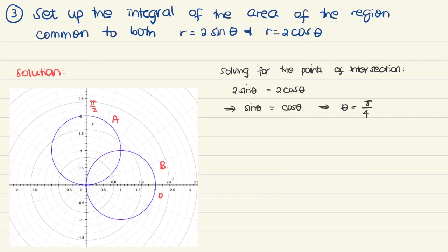This means theta should be pi over 4 since the circles are drawn from 0 to pi. We can plug pi over 4 into either r to get r equals square root of 2. So this intersection point is the square root of 2, pi over 4.